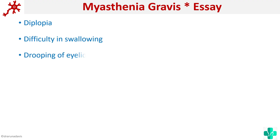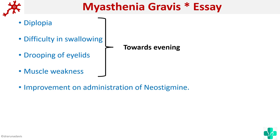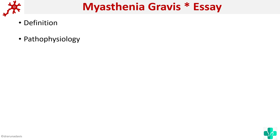Myasthenia gravis is an important essay question, and you have to look for clues. There will be clues like diplopia, difficulty in swallowing, drooping of eyelid, and muscle weakness — all of which might aggravate towards evening. The question may also mention improvement on administration of neostigmine. Look out for clues like these in the essay so that you can identify the question is on myasthenia gravis. So now you know the definition, the pathophysiology, symptoms, investigations, as well as treatment.